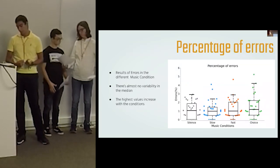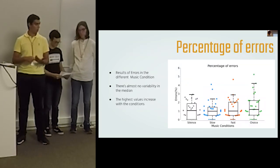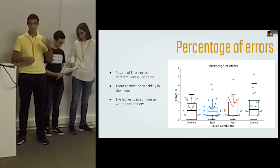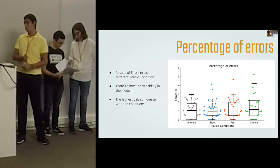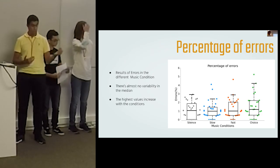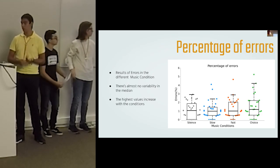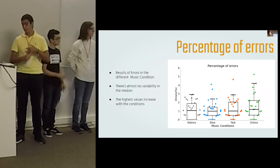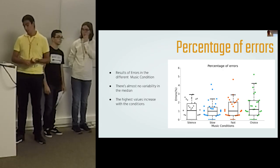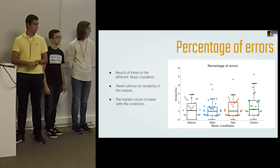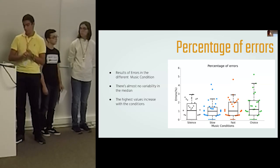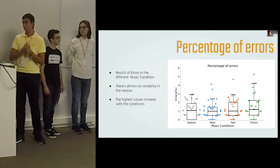In this graphic, we can see the percentage of errors in different music conditions—being again silent, slow, fast, and choice. We can see a slight difference in the median in each music condition, although there is an increase in the highest results throughout the conditions. This may be caused due to increasing fatigue throughout the experiment.